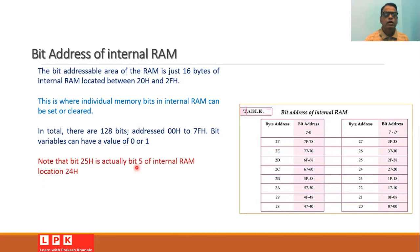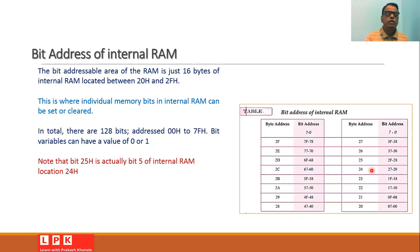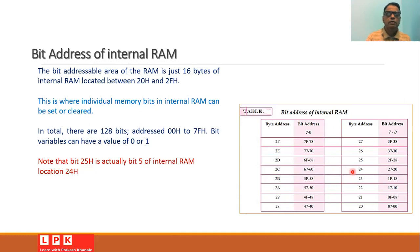For example, when we say the bit at address 25h, it means the internal RAM location 24h and bit number 5. When you use the address 25h in an instruction, you are accessing location 24h, bit 5. Similarly, address 07h means RAM location 20h and bit 7. You need to remember this table whenever you use any bit manipulation instruction for the 8051.